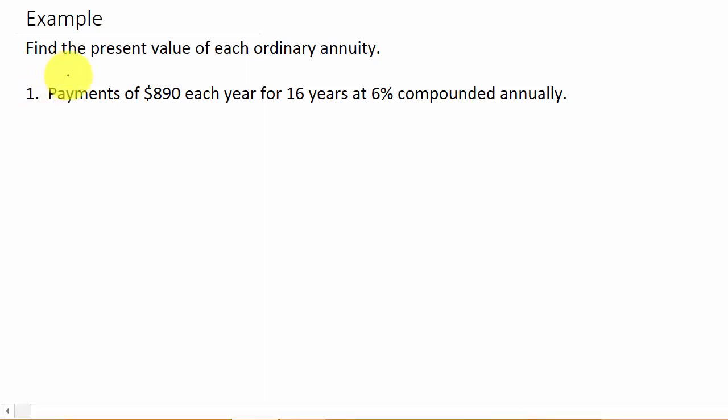So first thing, it says find the present value of each ordinary annuity. Payments of $890 each year for 16 years at 6% compounded annually. Alright, so first thing, let's just write our formula down. So P is equal to R times 1 minus 1 plus I to the negative N over I.